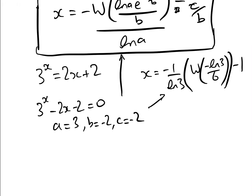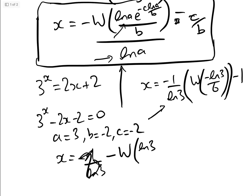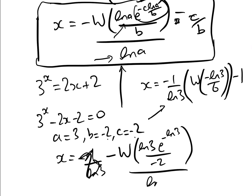Substituting into the general formula: x equals minus 1 over log 3, times W of log 3 times e to the minus c log a over b. Here c is minus 2 and b is minus 2, so c over b equals 1. That gives us e to the minus log 3 over b, where b is minus 2, so the exponent is minus log 3 divided by minus 2. Then minus c over b equals minus 1.